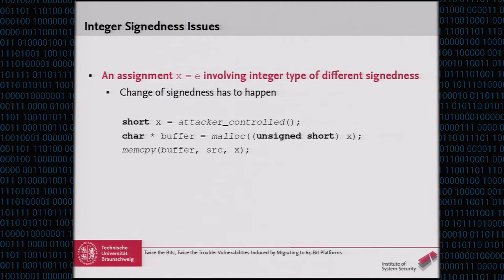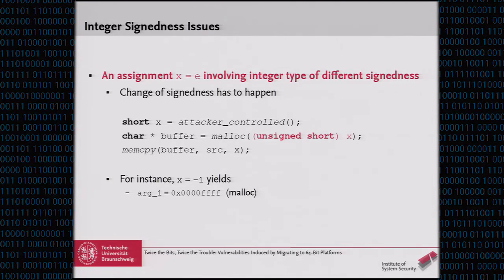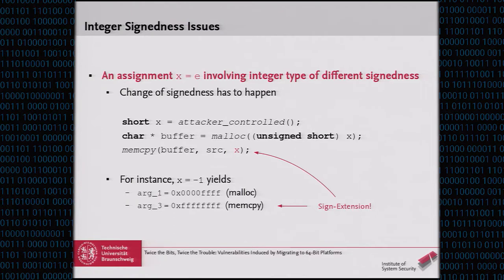When we look at signness issues in assignments, if the assignment involves types of different signness, we have to change the sign of the variable. In our example, we get a variable of type short and explicitly cast it to unsigned short, which changes the signness and reinterprets the value — for instance, minus one becomes the maximum value of unsigned short. If we use the initial value for the memcpy, there is an implicit cast to size_t, and since size_t is larger than short, we get an additional sign extension padding the sign bit to the front.